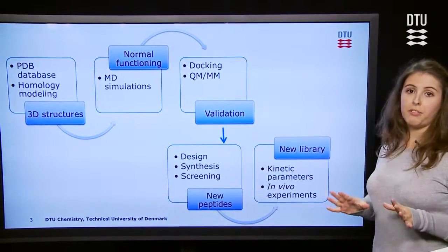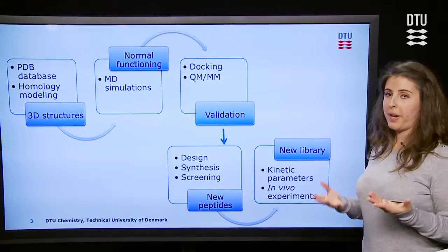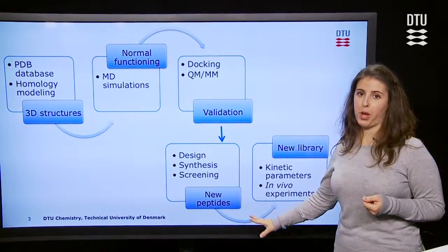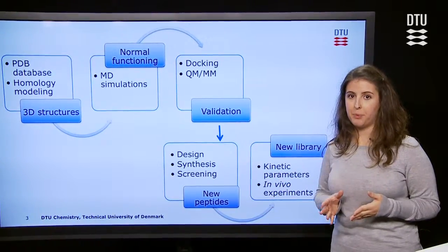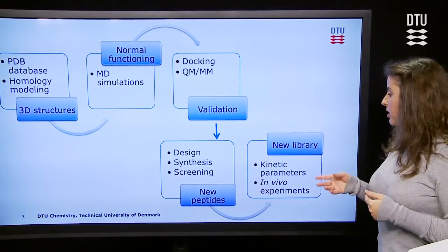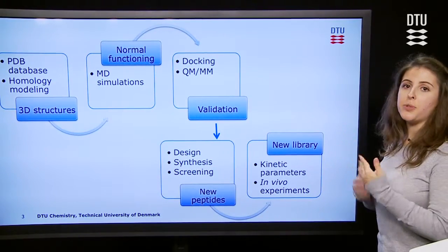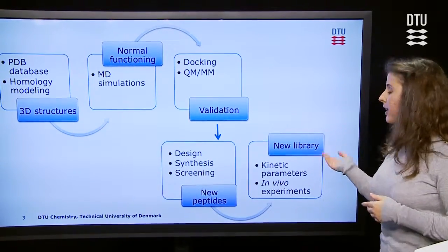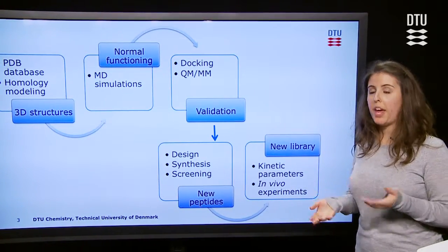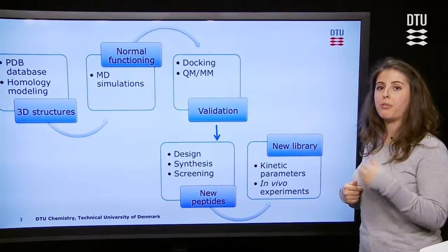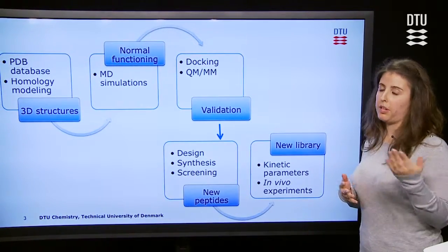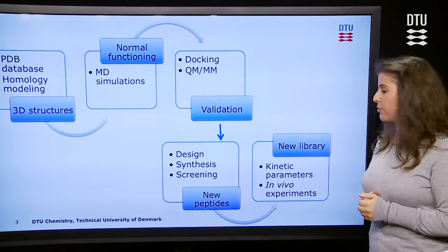If everything fits so far, then we are on the right path. We can now design, synthesize, and screen new peptides for enzymatic activity. The best combinations — meaning those with the best kinetic parameters — can then be tested in vivo, in a cell line for example, and we can create our library from these experiments for either inhibitors or substrates.